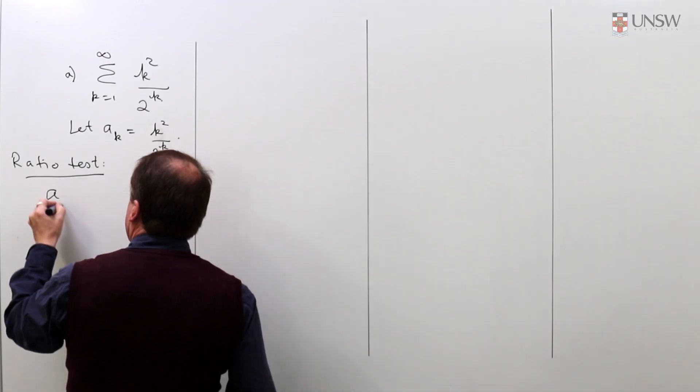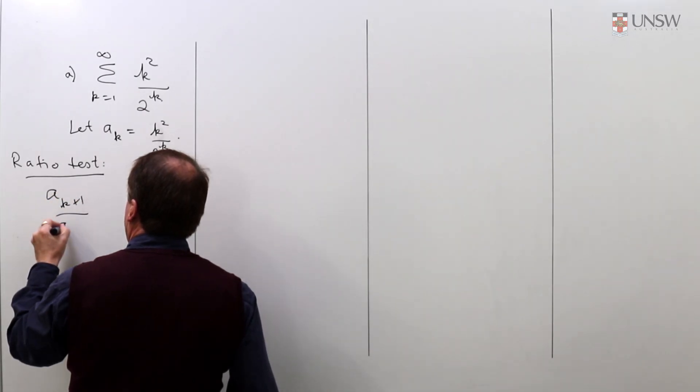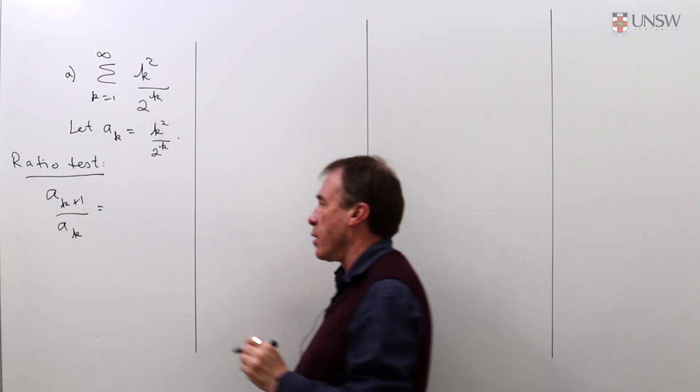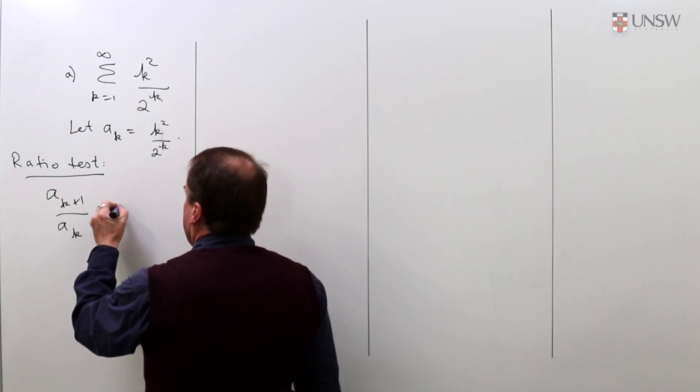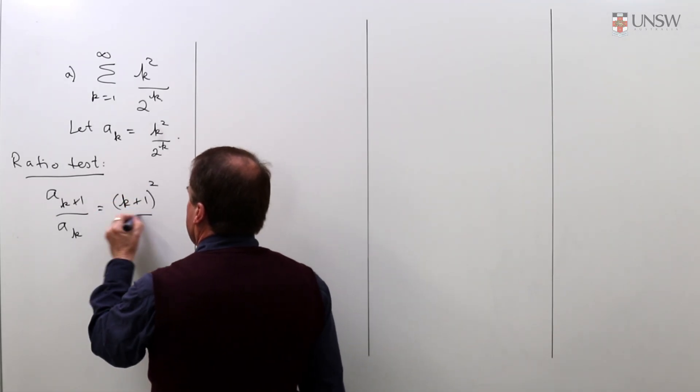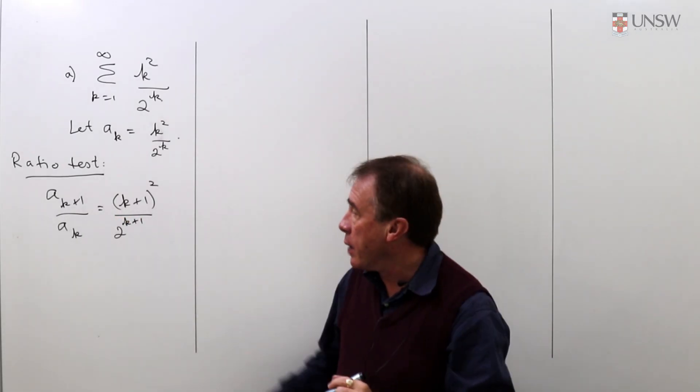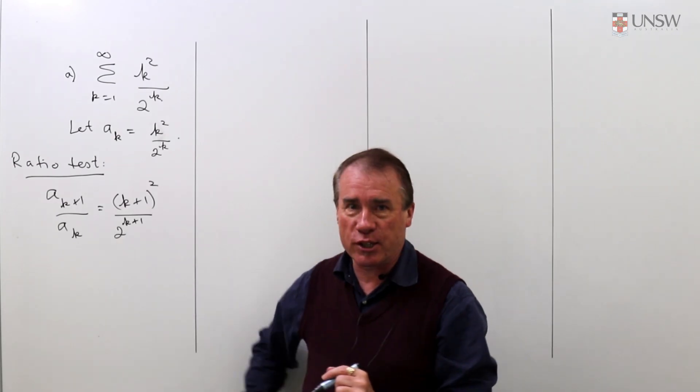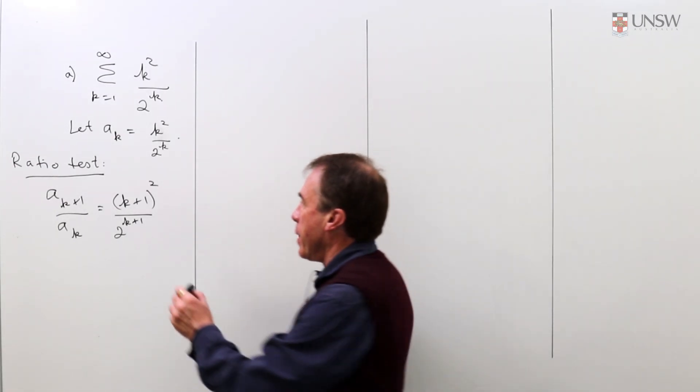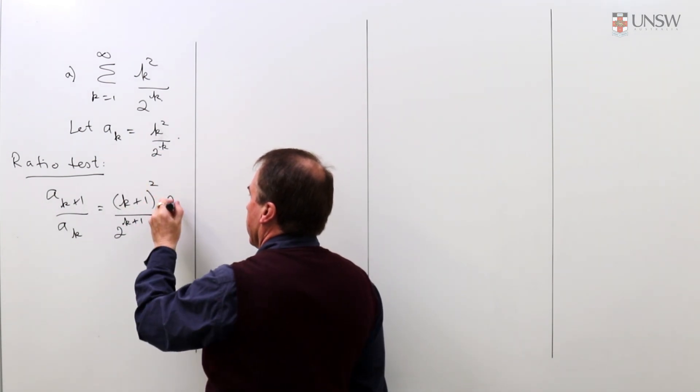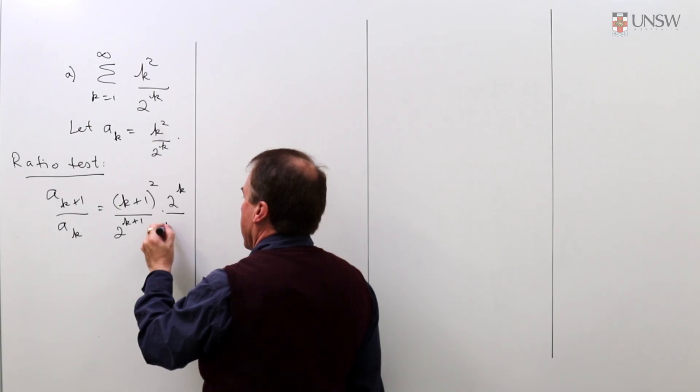In the ratio test we look at the ratio of two successive terms, a sub k plus 1 over a sub k. Where you see k you copy k plus 1. That takes care of the numerator. Rather than have double deca fractions I'm going to invert and multiply, so I get 2 to the k over k squared.